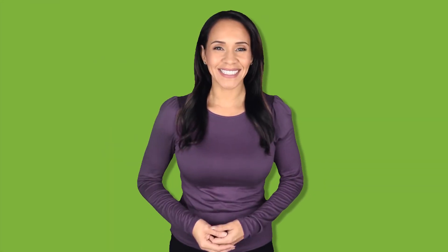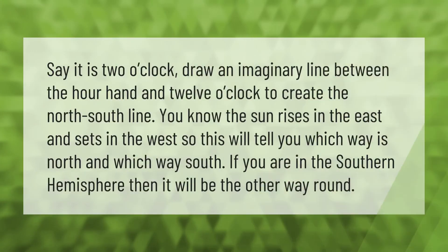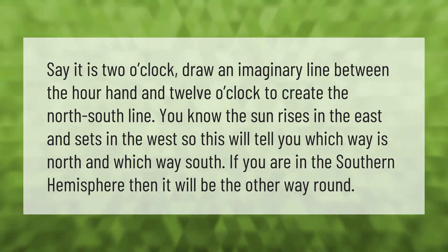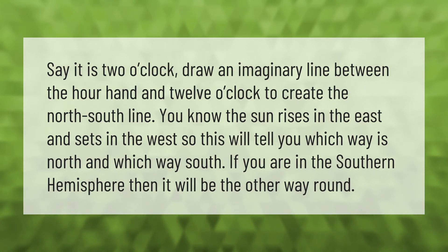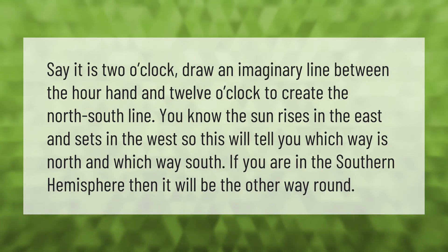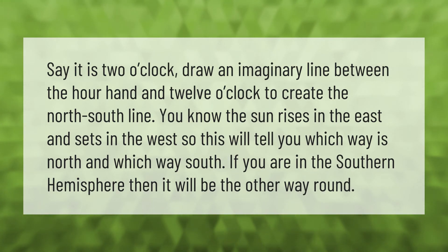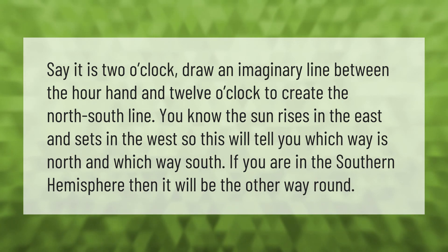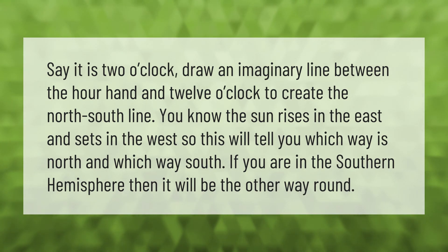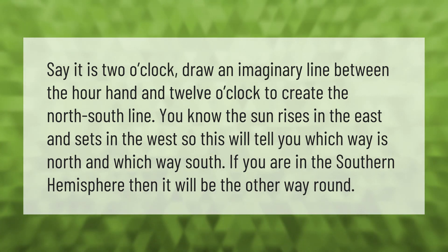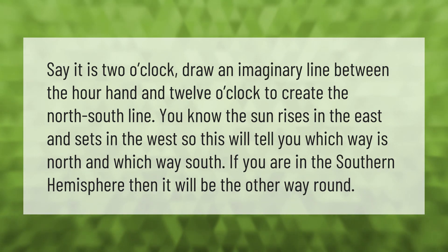Say it is two o'clock — draw an imaginary line between the hour hand and 12 o'clock to create the north-south line. You know the sun rises in the east and sets in the west, so this will tell you which way is north and which way is south. If you are in the southern hemisphere, it will be the other way around.